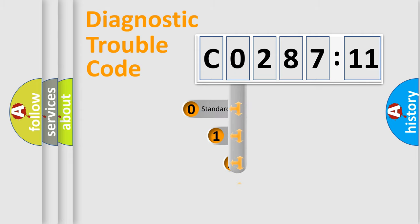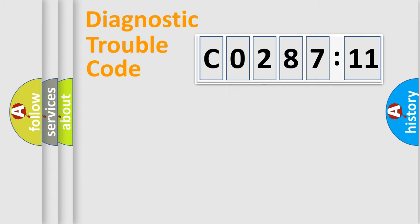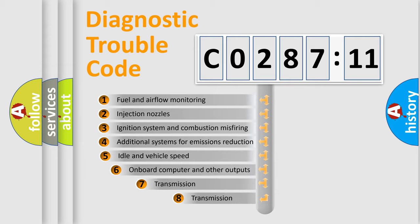This distribution is defined in the first character code. If the second character is expressed as zero, it is a standardized error. In the case of numbers 1, 2, 3, it is a manufacturer-specific error.